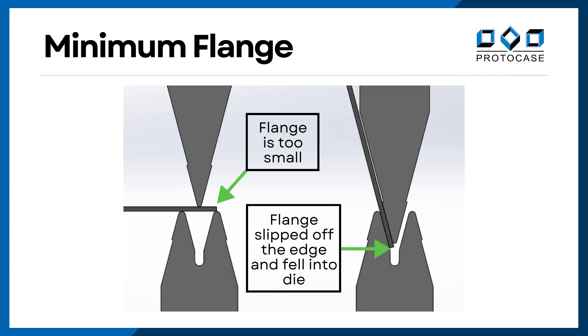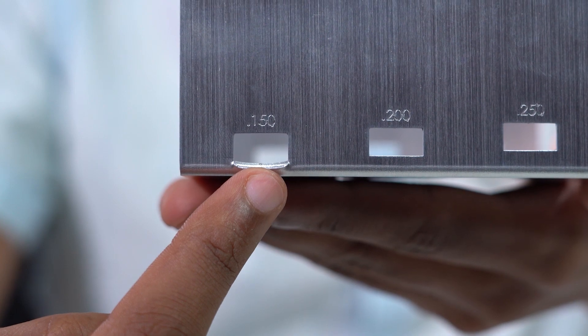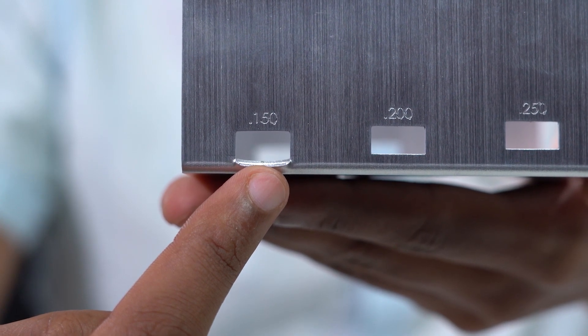If the flange breaks this value, it will fall into the die when we attempt to bend it and not bend to 90 degrees. If your cutout breaks this value, the bottom edge will not bend over with the material and the result will be a flared edge.